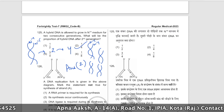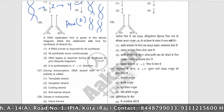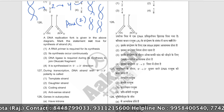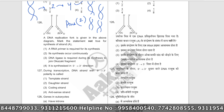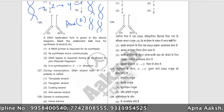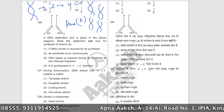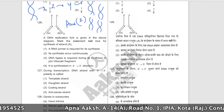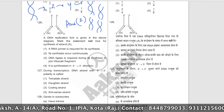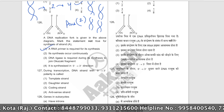In the given DNA replication fork diagram, mark the statement that is not true for synthesis of strand A. Strand A is the leading strand. Its synthesis occurs continuously — so saying synthesis occurs continuously for A is actually a true statement, not false.